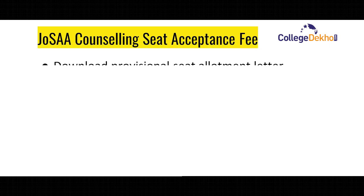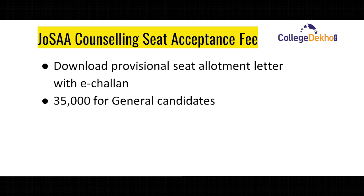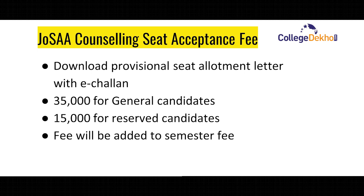What is the seat acceptance fee for JOSA? If you have secured a seat through JOSA counseling, you have to download the provisional allotment letter along with the e-challan for the payment of seat acceptance fee. The seat acceptance fee for general candidates is ₹35,000, whereas for reserved candidates such as SC, ST, PWD, OBC, and others, the fee will be ₹15,000. The fee can be paid through e-challan, SBI net banking, or by using a credit or debit card. The fee will be included in the semester fees once the student has confirmed admission, and it is mandatory for all allocated candidates to pay this fee to confirm their admission.